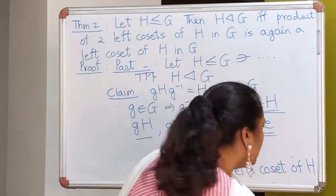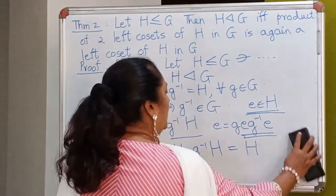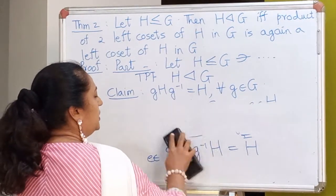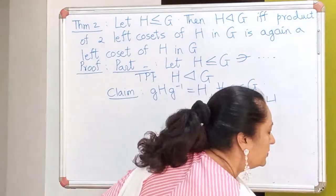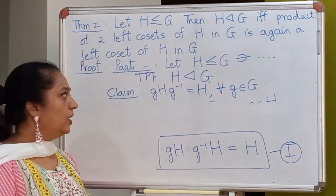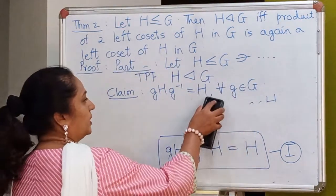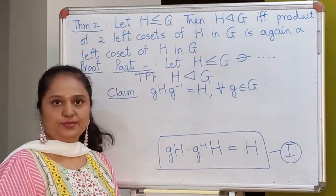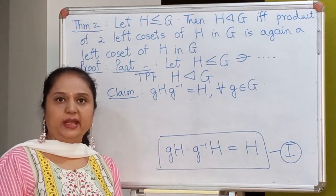So as an intermediate step, I have proved that gH · g⁻¹H equals H. Let me call this Relation 1. Now let's come back to the main result. I wanted to prove that gHg⁻¹ equals H, so let me take any element on the left-hand side and prove that it also belongs to the right-hand side.